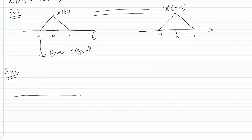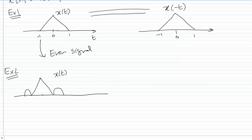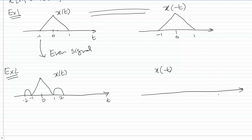Let's take another example. Assume this to be our signal. If I plot its time-reversed counterpart x(-t), I end up with this signal, and since these two are the same, this signal is also an even signal.